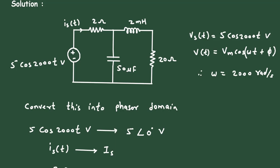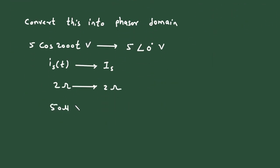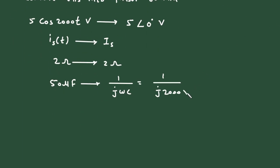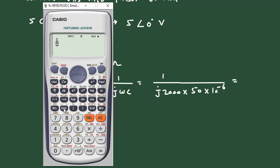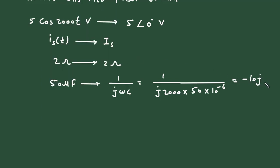The 50 microfarad capacitor will change to 1/(jωC). With ω = 2000 and C = 50×10⁻⁶, this becomes 1/(j × 2000 × 50×10⁻⁶), which equals −10j ohms.